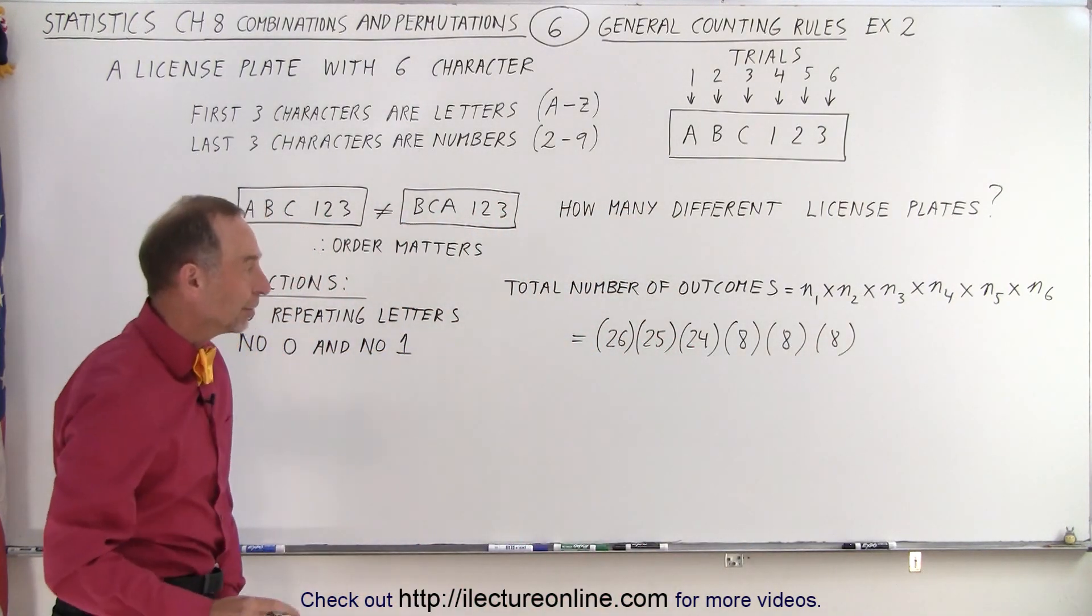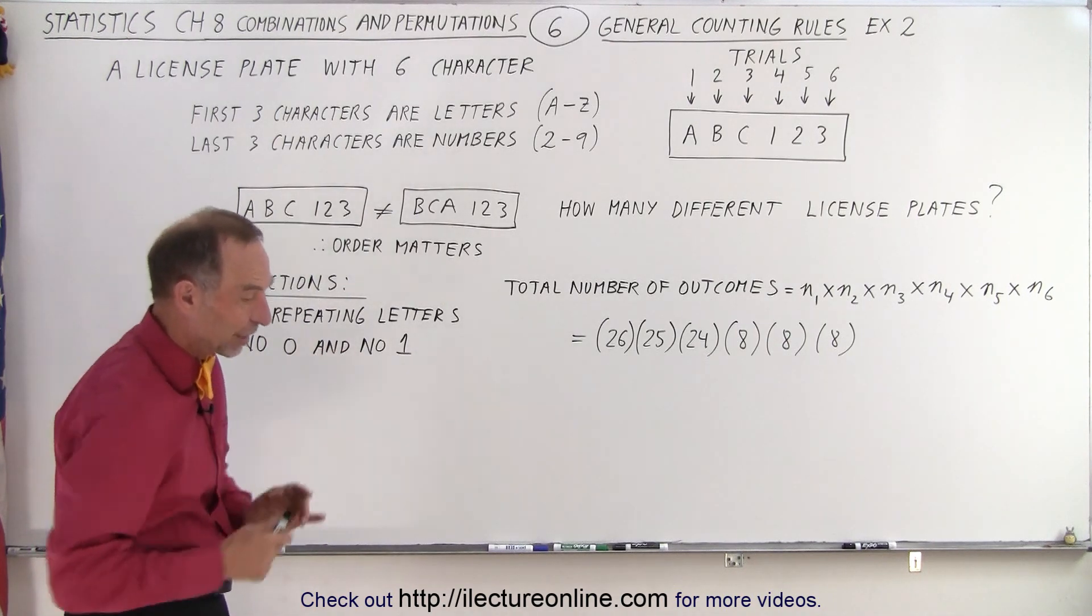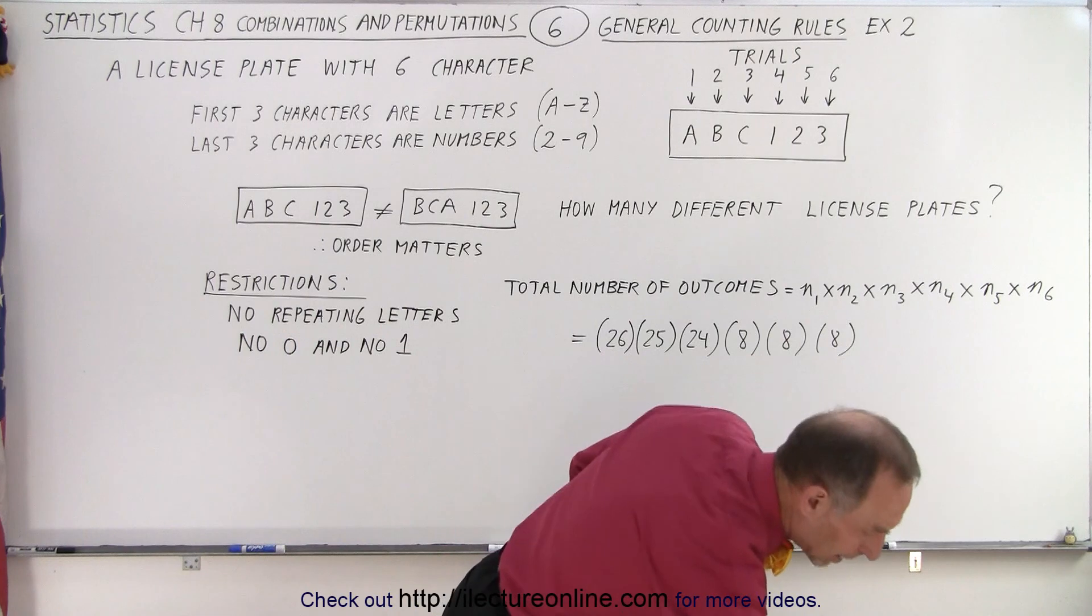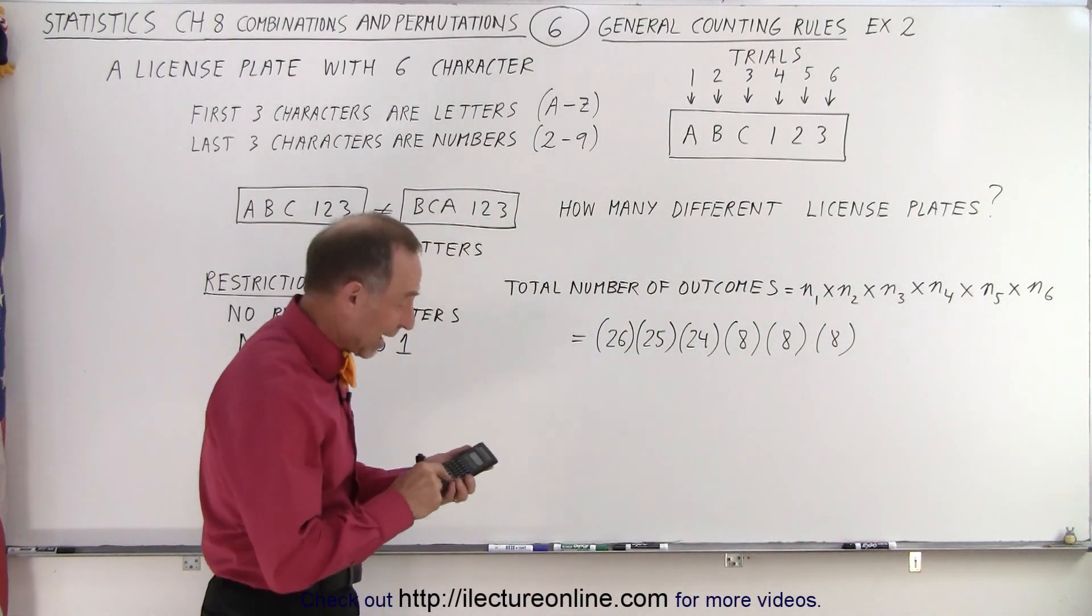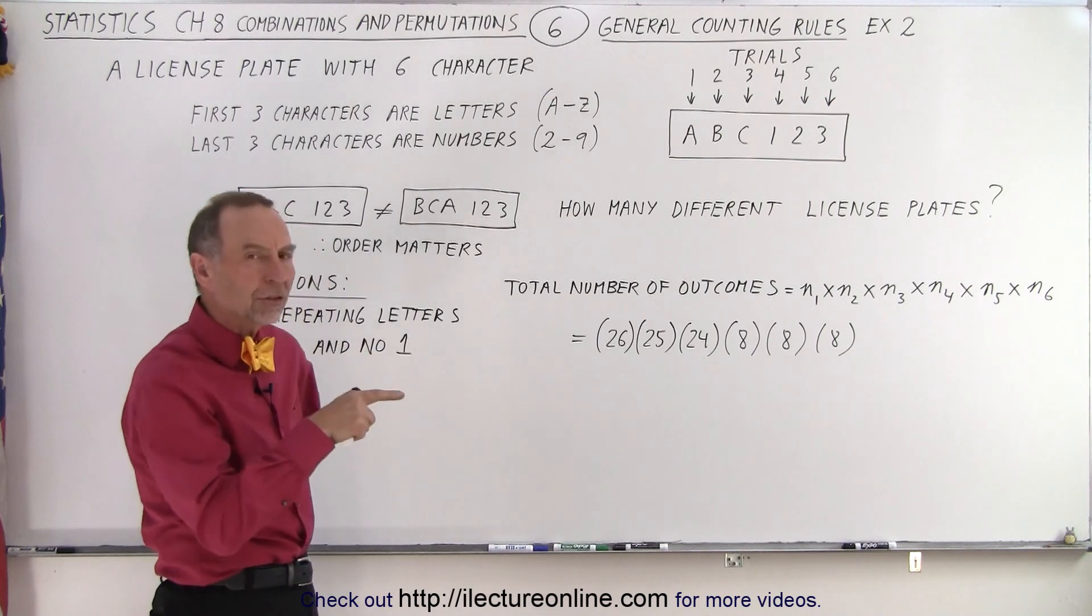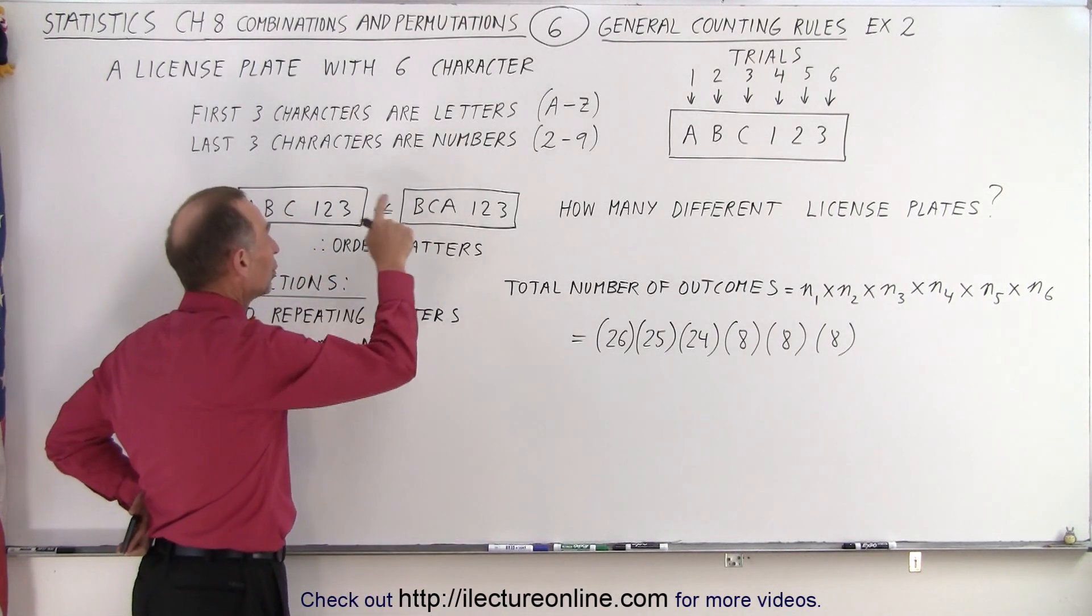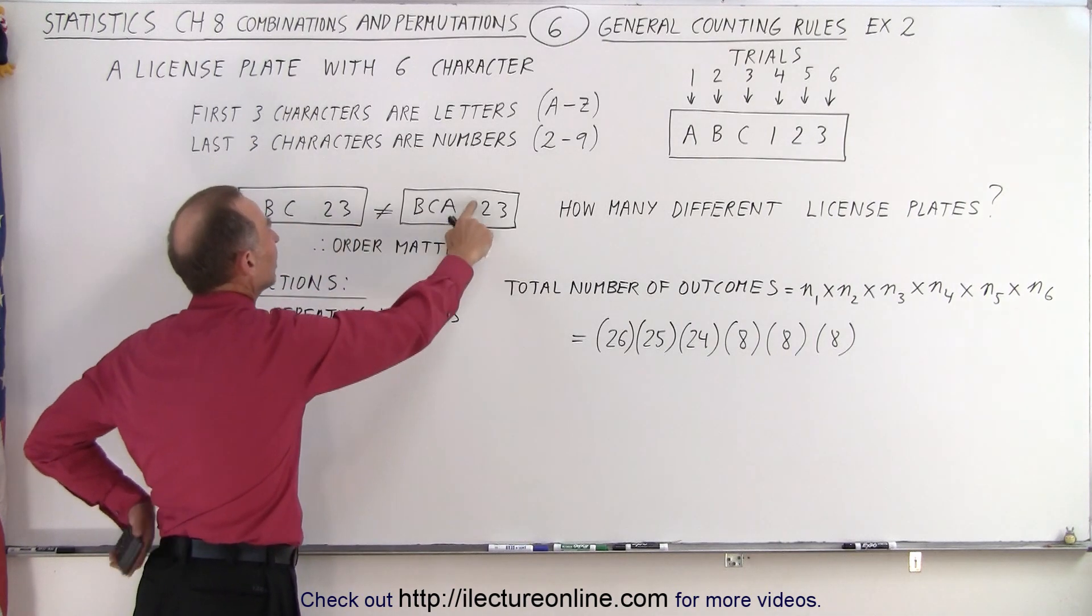So that is then the, these are then the 6 outcomes of the 6 trials, the 6 different characters that are chosen. And let's see how many license plates we can have now. And again, are those permutations or are those combinations? Well, it turns out permutations because the order does matter.